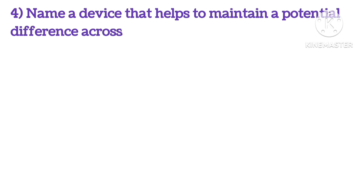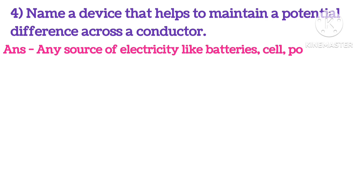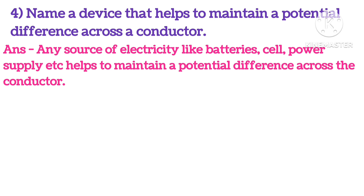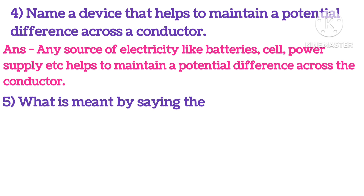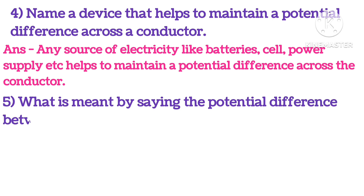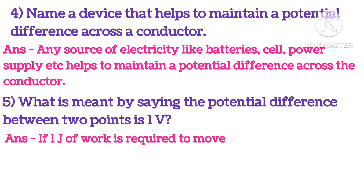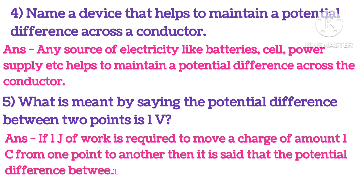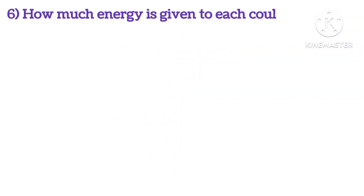Name a device that helps to maintain a potential difference across a conductor. Any source of electricity like a battery, cell, or power supply helps to maintain the potential difference across the conductor. What is meant by saying the potential difference between 2 points is 1 volt? If 1 joule of work is required to move a charge of 1 coulomb from one point to another, then the potential difference between 2 points is said to be 1 volt.